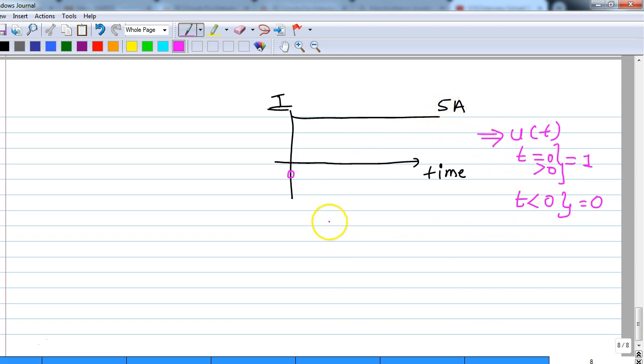If you remember what is the integration of the unit step function, it is nothing but R of t. R of t is nothing but a ramp signal. So what actually happens is your signal voltage is nothing but a ramp, which is nothing but the voltage across your capacitor.